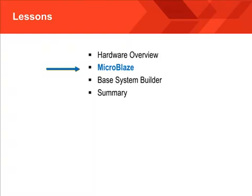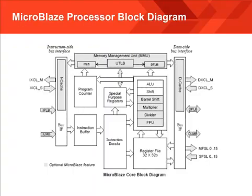Now let's have a look at the Microblaze processor core in more detail. One of the benefits of Microblaze being a soft processor core is that you only get the functionality you want and none of the functionality you don't need. That saves FPGA resources and helps improve the embedded system speed because there's less logic to be placed and routed.